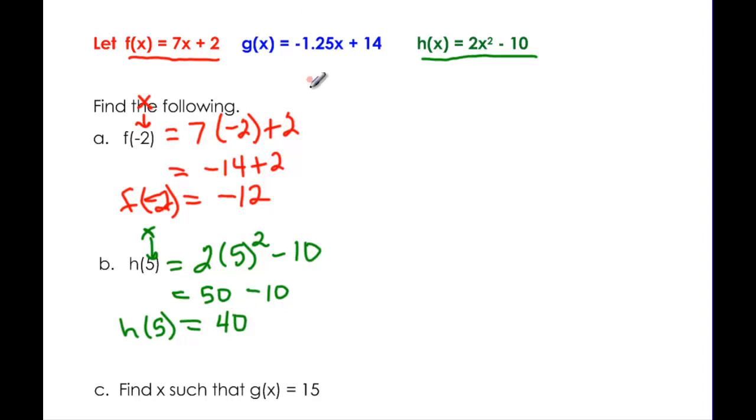And the last problem, we had this g function. Find x such that g(x) is equal to 15. So remember, this is a y. So we're going to say 15 = -1.25x + 14. Subtracting the 14, we get 1 = -1.25x. And if we divide by -1.25, we find out that -0.8 is equal to x.